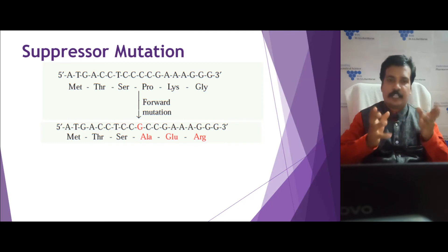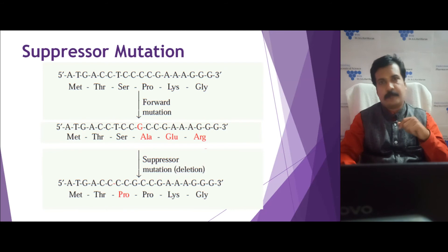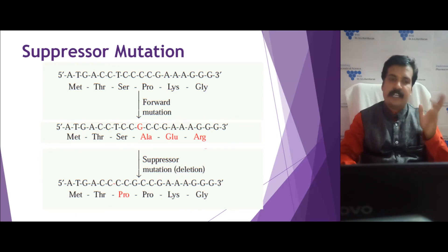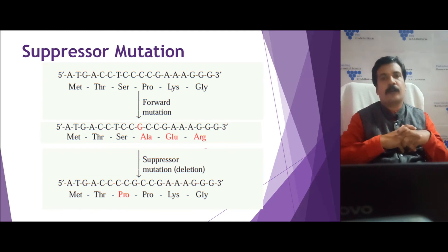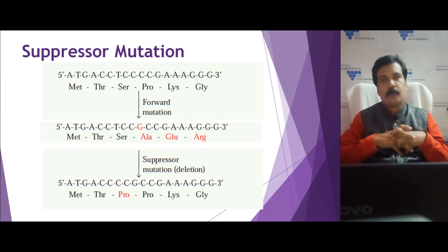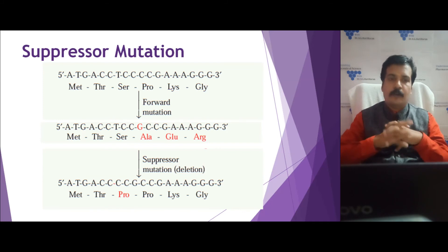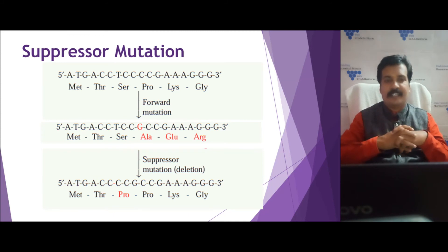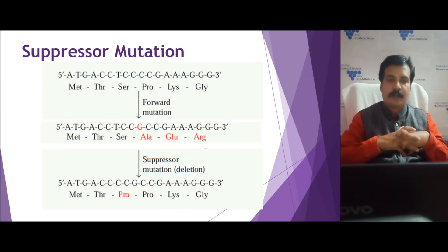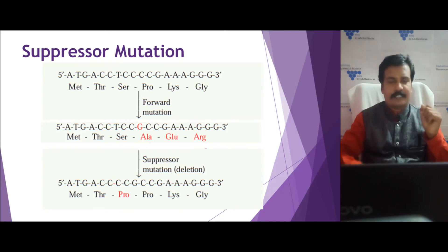In this suppressor mutation, instead of deleting the inserted guanine (which would be true reversion), a different nucleotide — a cytosine or thymine near the cytosine — is deleted. So the serine TCC changes to CCC, coding for proline, while the rest of the original sequence is maintained. This is called a suppressor mutation.